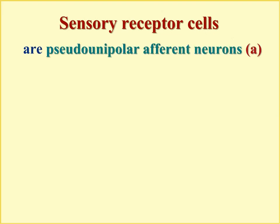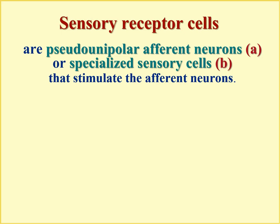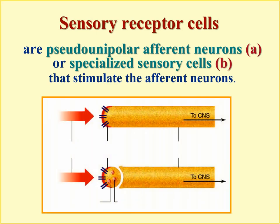Sensory receptor cells are of two types. Case A: pseudo-unipolar afferent neurons are themselves receptors — the nerve endings are receptors. Case B: specialized sensory cells contact and stimulate the afferent neurons — a more complex situation. When a stimulus acts, it produces stimulation of the receptor membrane, which can be the ending of the afferent neuron itself, or a specific receptor cell with vesicles containing neurotransmitter that contacts the afferent neuron fiber.